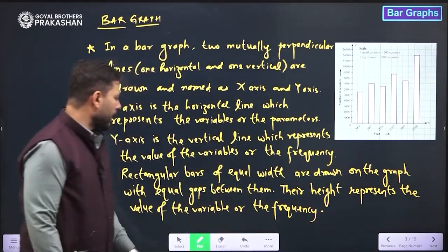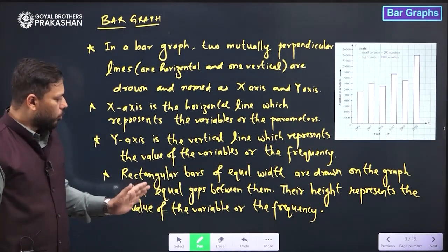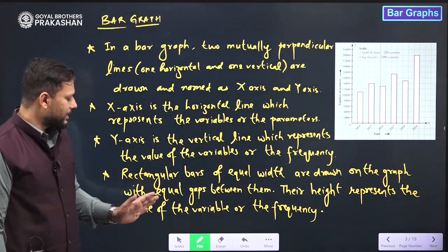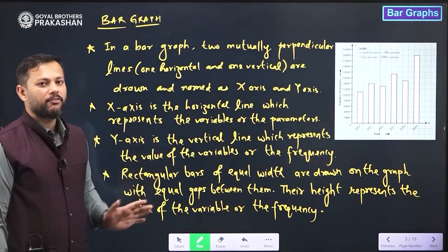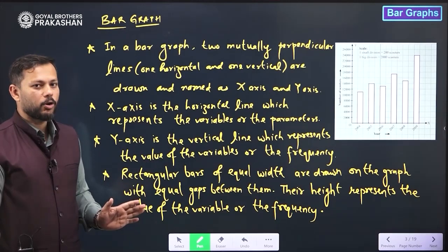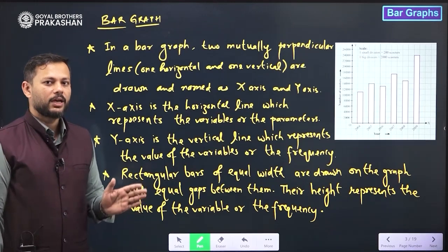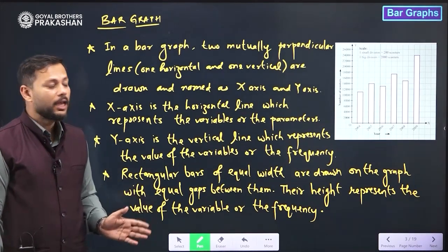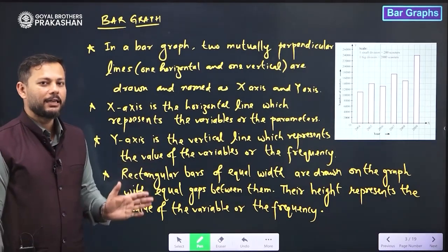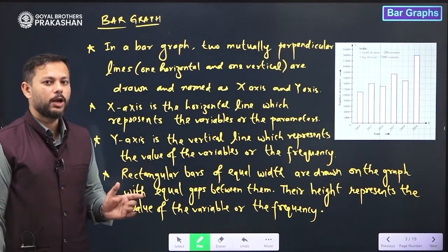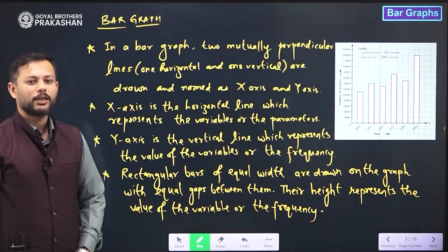Rectangular bars of equal width are drawn on the graph with equal gaps between them. Their height represents the value of the variable or the frequency. So this is what the bar graph looks like — it will have two mutually perpendicular axes, that is x-axis and y-axis. One of them will be for the variables, the other for the value, that is the frequency. We use rectangular bars of equal width and equal gap between them, and their height varies depending on the value of the variable or the frequency. We are going to do some questions related to it as well. I hope this part is clear to all of you. Thank you so much.